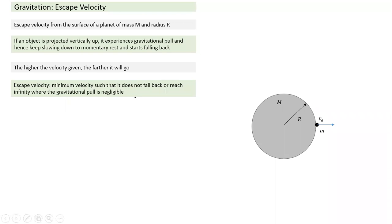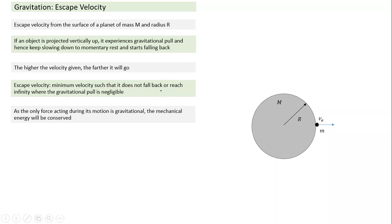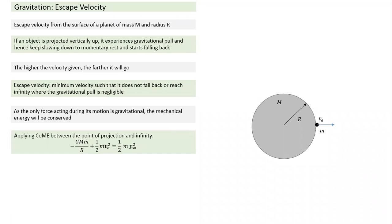It falls back because of gravitational pull when the velocity becomes zero. But by the time velocity drops to zero, if it has reached a point where there is no gravitational pull, it will not come back. So escape velocity is the minimum velocity such that it does not fall back, or it reaches infinity where gravitational pull is zero. Since only one force is acting — gravitational — mechanical energy is conserved.